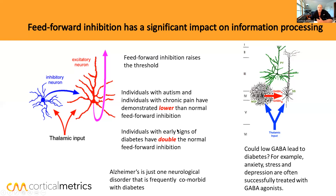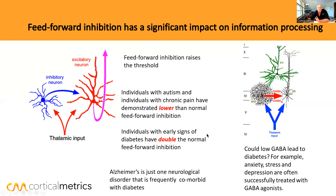It turns out that with early-stage diabetes — people who didn't even have peripheral neuropathy at the time, very early on in their stage of diabetes — they actually have double the normal feedforward inhibition. So that's kind of fascinating. They've got twice the amount of feedforward inhibition as normal people — not twice as low as autism and chronic pain, but twice the amount of normal.